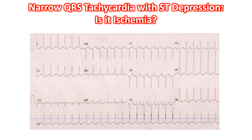A narrow QRS tachycardia is seen at a rate of around 150 per minute. ST segment depression is seen in inferior and lateral leads, with T wave inversion in leads I, aVL, and V6.